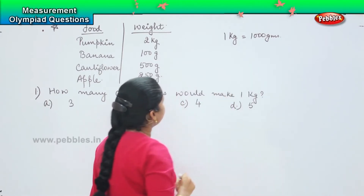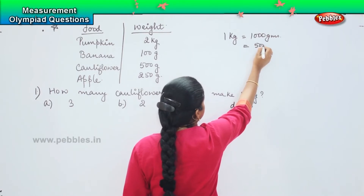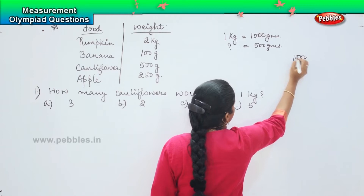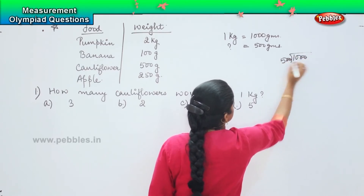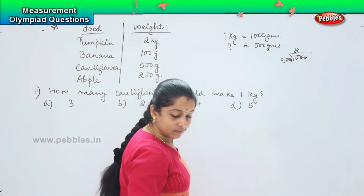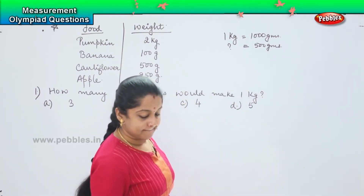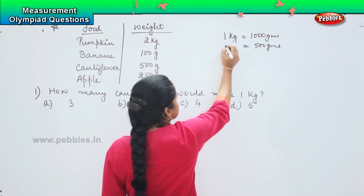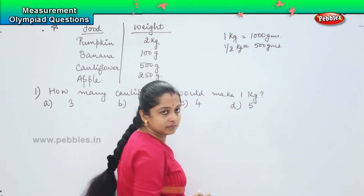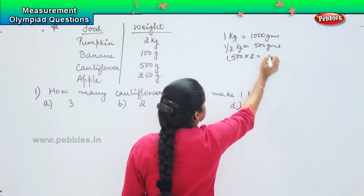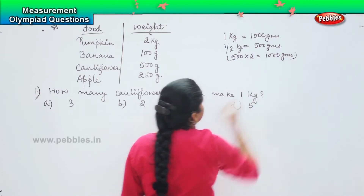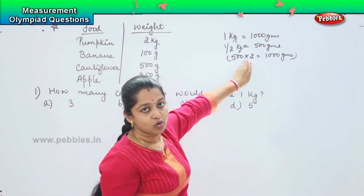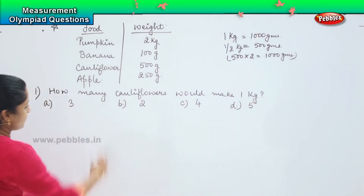It is talking about 500 grams — cauliflower weighs 500 grams. So we will be dividing: 1000 divided by 500. 5 into 2 is 10, so it will be half kg. Because 500 into 2 makes 1000 grams. So the value of 1 cauliflower is 500 grams, and if we buy 2 cauliflowers it will come up to 1 kg. So the answer is B: 2.